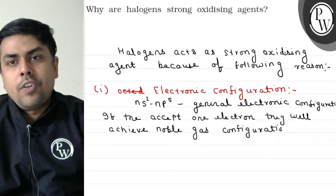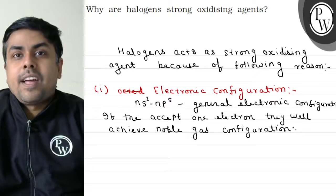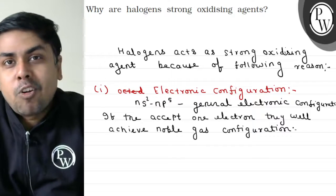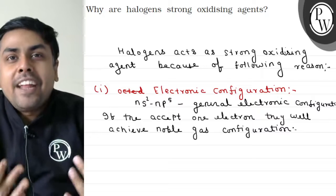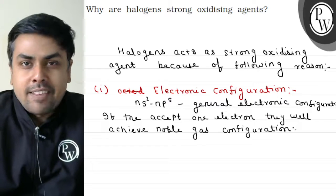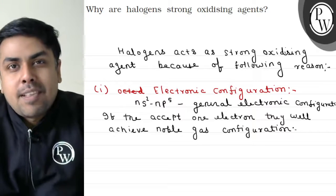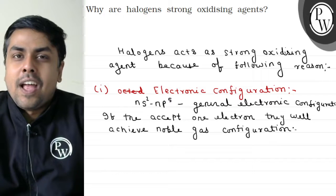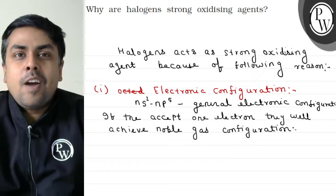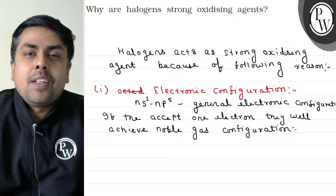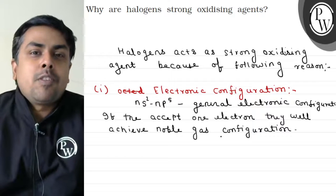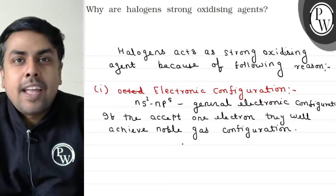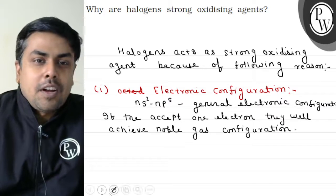Noble gas configuration is a highly stable configuration. So in order to gain stability, halogens will accept one electron, and if they are accepting electrons they are getting reduced, and if they are getting reduced they will act as an oxidizing agent. So because they achieve a noble gas configuration, that's why they accept electrons.